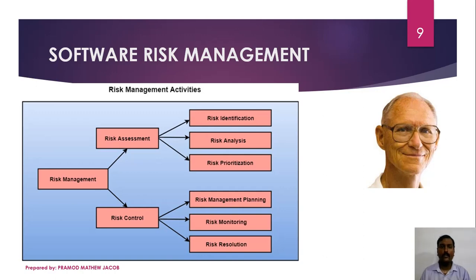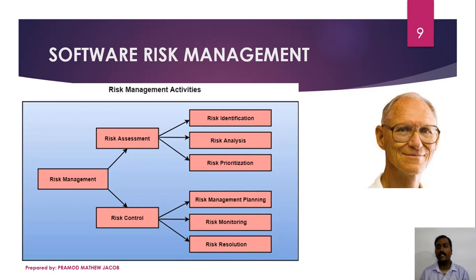Next we will learn about the software risk management activities proposed by Barry Boehm. Barry Boehm categorized risk management activities into two parts: risk assessment and risk control. In the risk assessment module, the system analyst or project manager identifies the various risks associated with the project, analyzes their impact, and prioritizes them. In the risk control module, they prepare a risk management plan, and based on that plan the developers carry out risk resolution strategies.